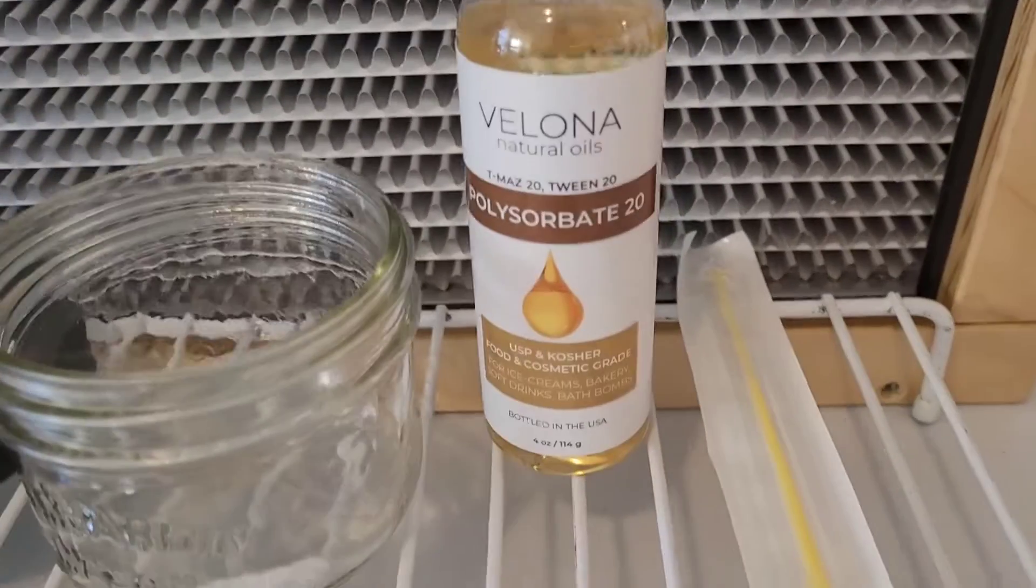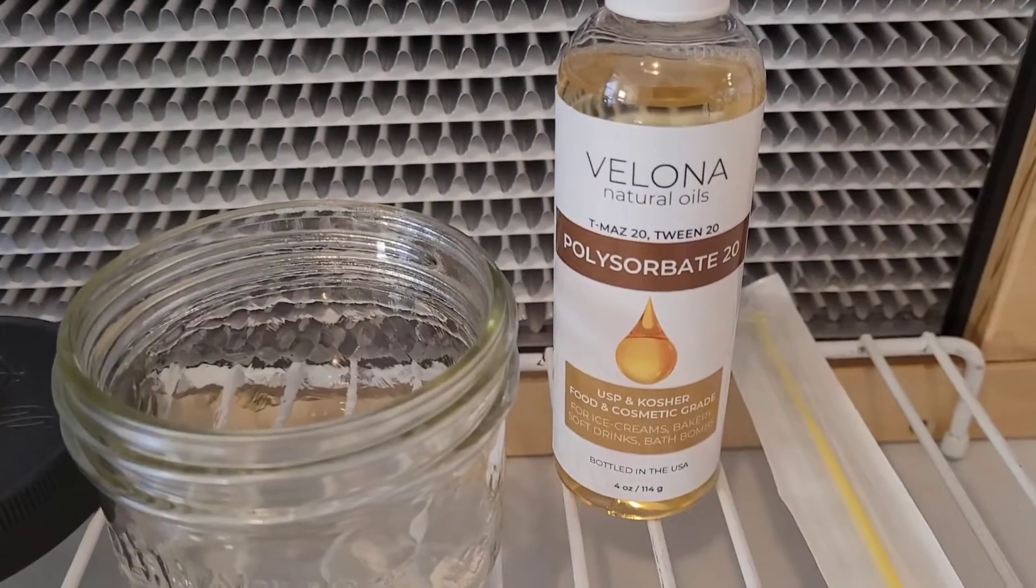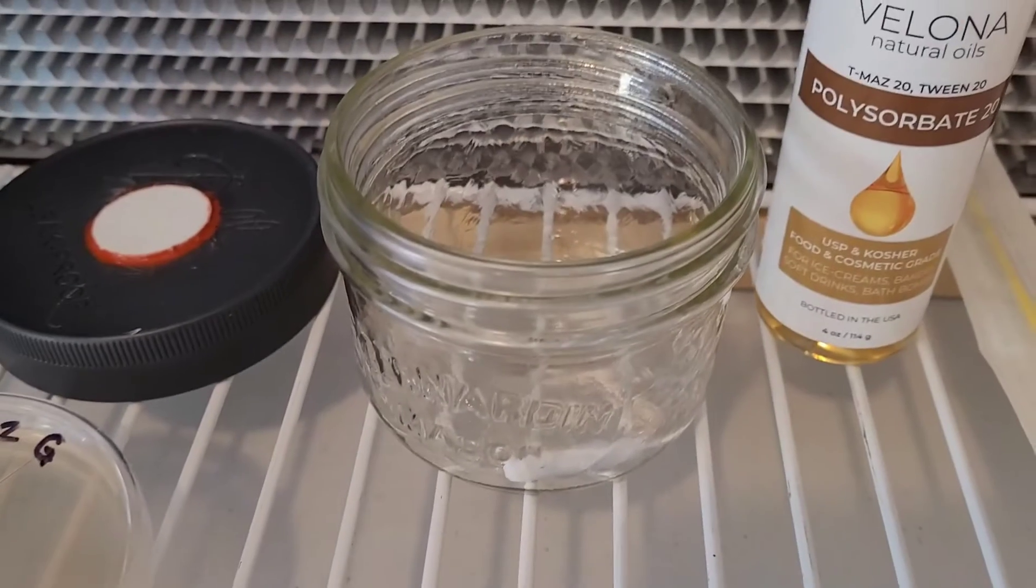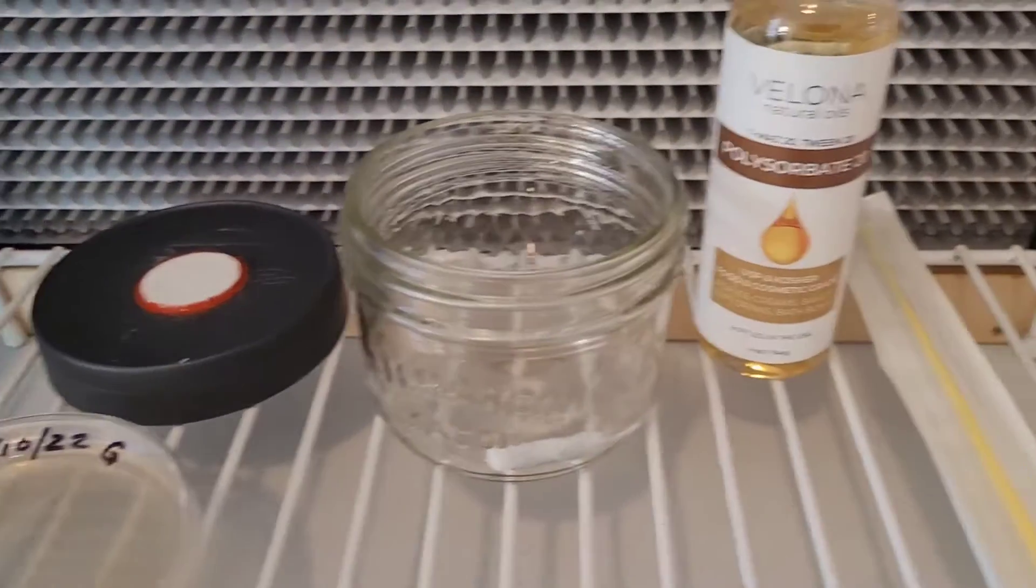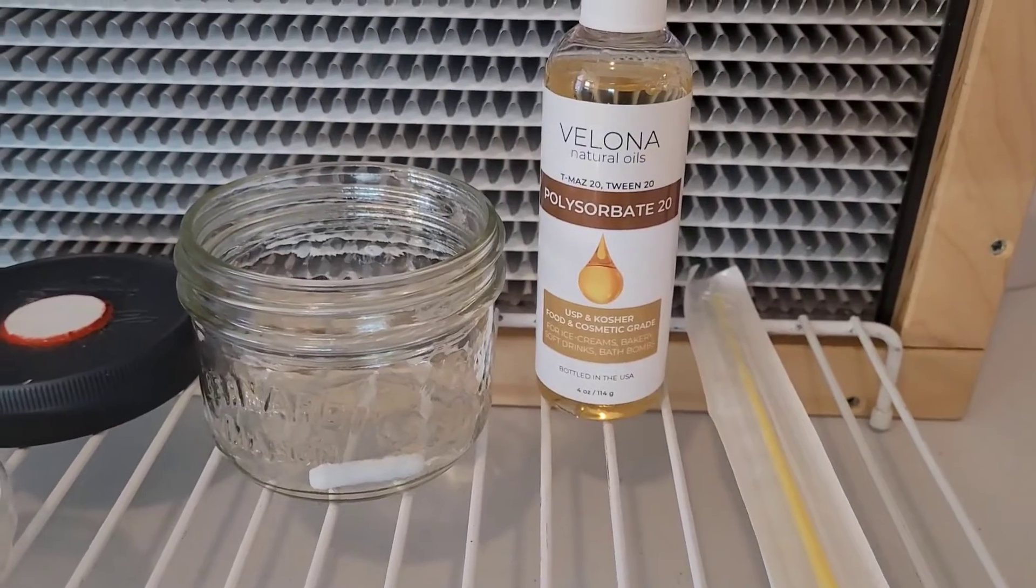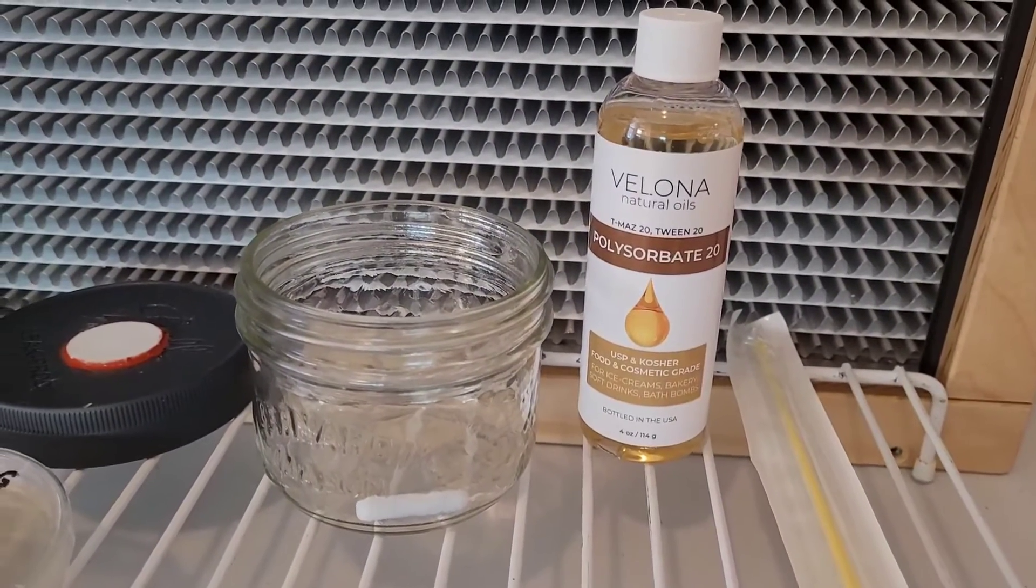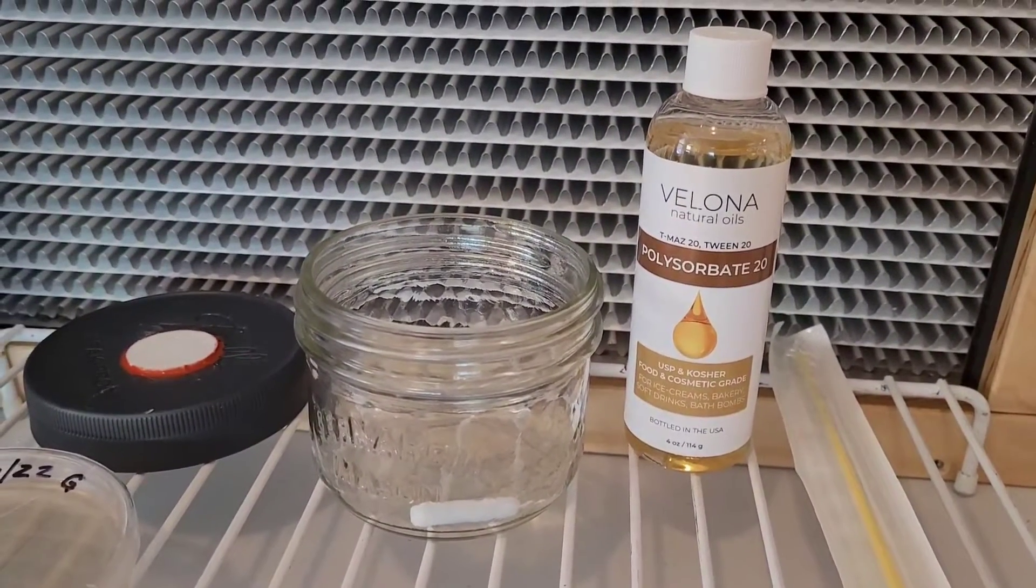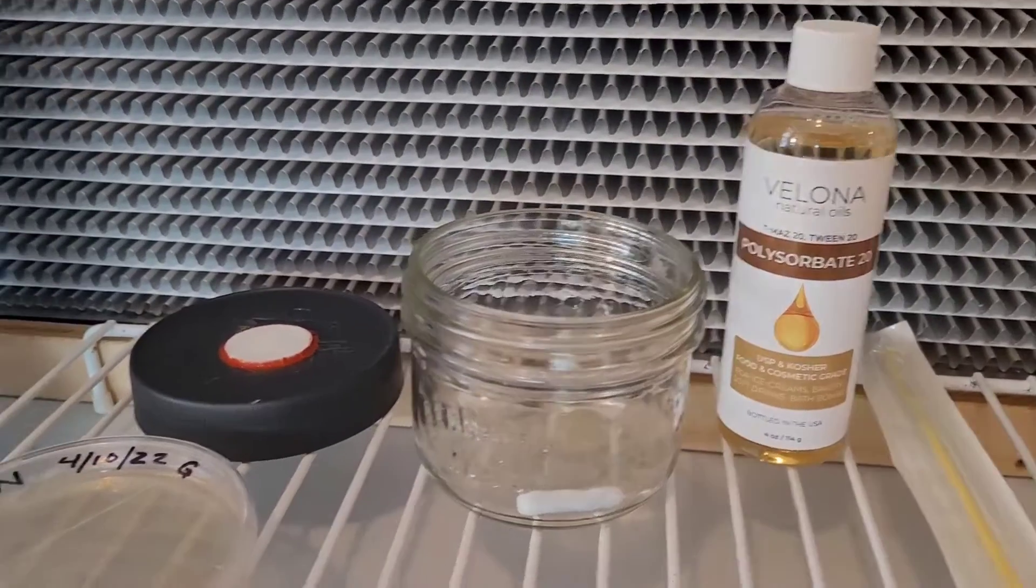The polysorbate 20 is going to be the surfactant. I'm going to add a drop of this to the water to keep those spores from clumping together. If you don't have polysorbate 20, you could probably just use a drop of dish soap as your surfactant.